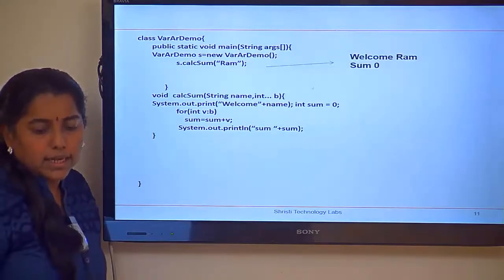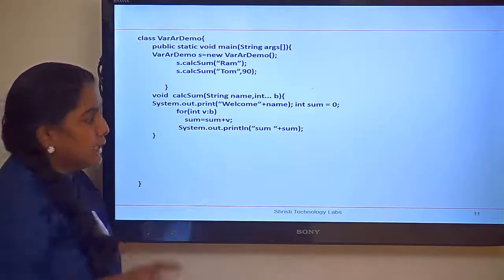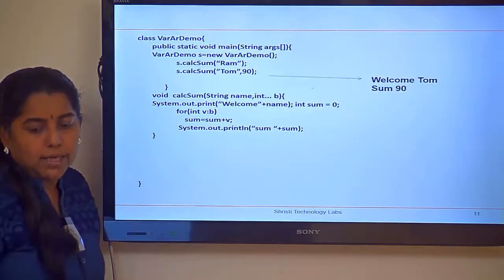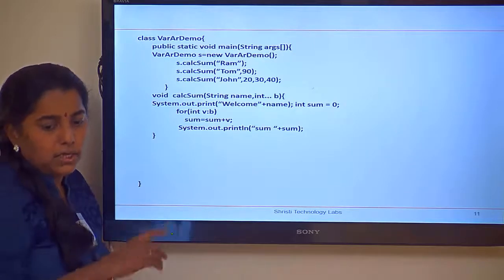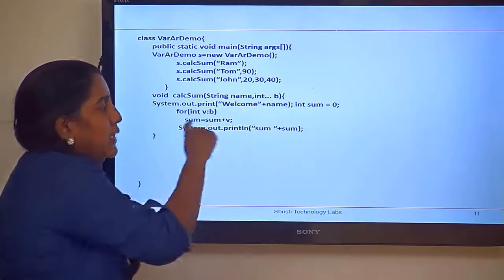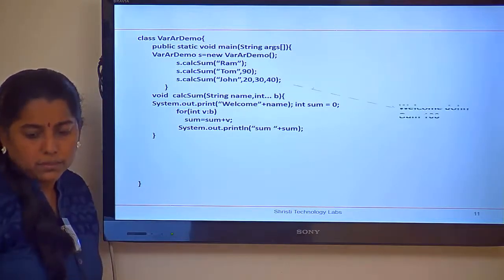Then, trying to call s dot calc sum of ram, tham and 90. What it will print? Welcome tham. And the sum will be 90. What will happen for the next? This one. Jan 20, 30, 40. Three times it will iterate over the for loop. And it will print the sum. So, the output is going to be welcome jan and sum 100.